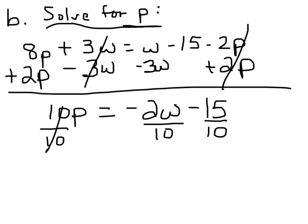And when I do, I'm going to get p equals... 2/10 reduces to negative 1/5 w minus 3 over 2.